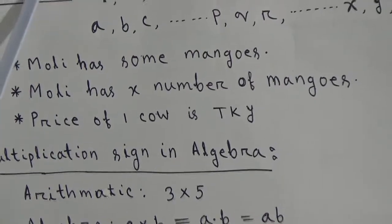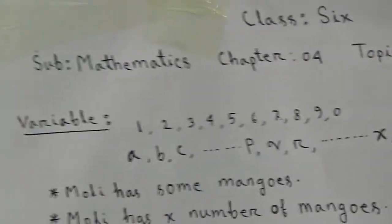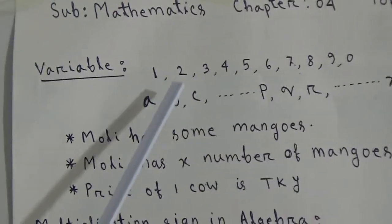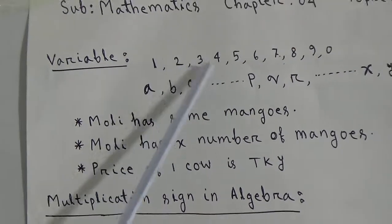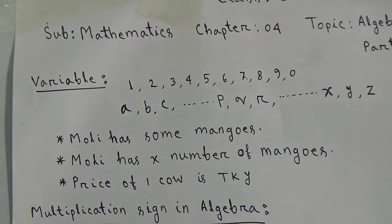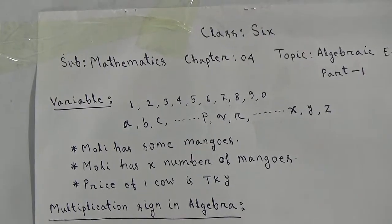At first I want to discuss about variable. In arithmetic we use some numerical symbols such as 1, 2, 3, 4, 5, 6, 7, 8, 9, 0 for expressing any number.